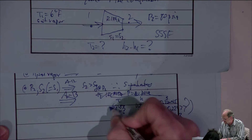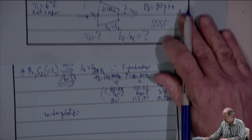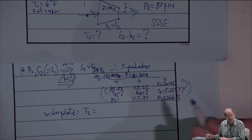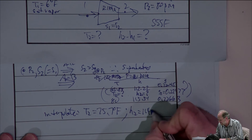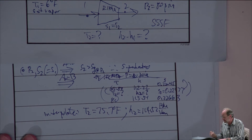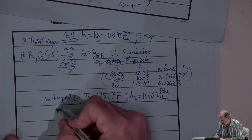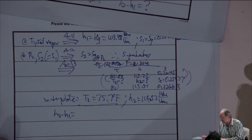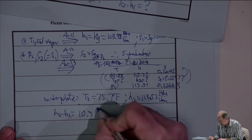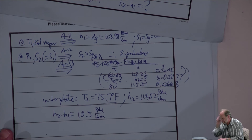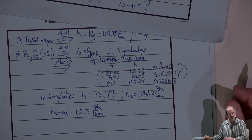Doing the interpolation, T2 is 75.7 degrees Fahrenheit and H2 is 114.52 BTUs per pound mass. The enthalpy change H2 minus H1 is approximately 10.5 BTUs per pound mass (more precisely 10.46). That's Part A completed — the discharge temperature and enthalpy change.